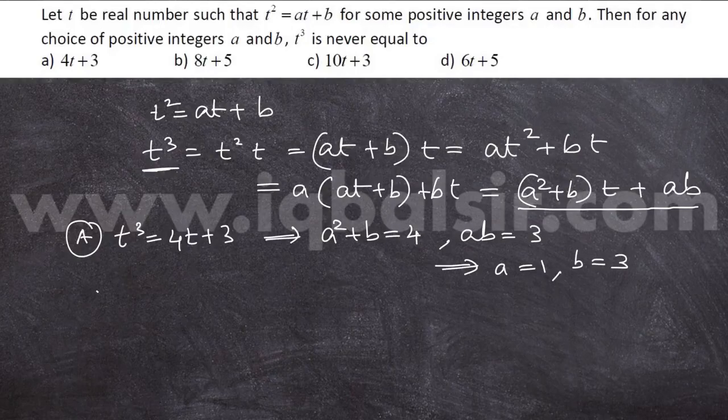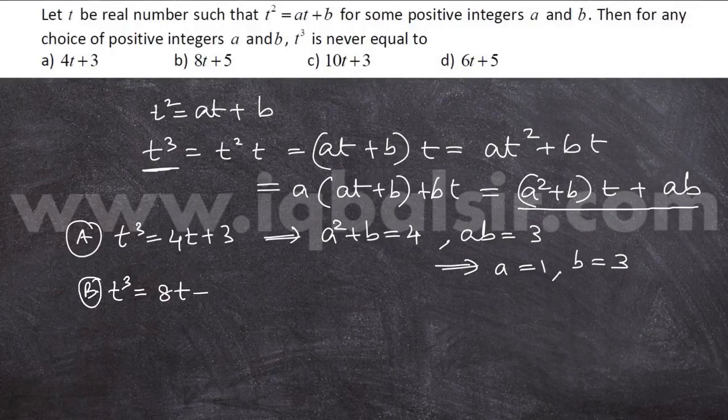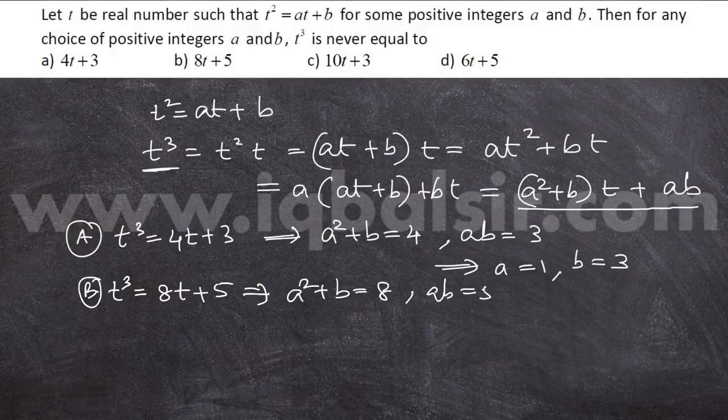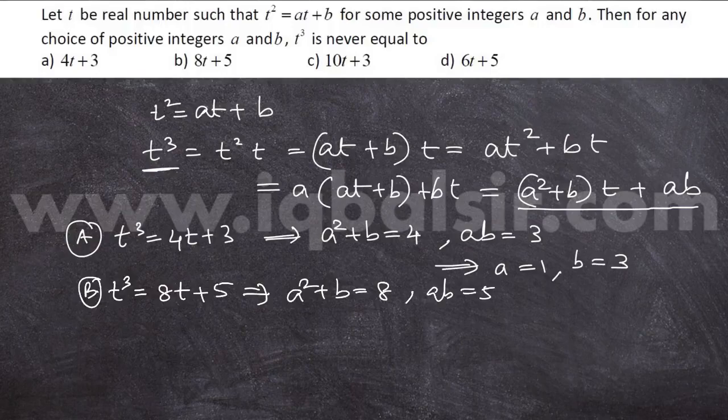For option B, t cubed is equal to 8t plus 5. That means a squared plus b is equal to 8 and ab is equal to 5. Whenever ab is 5 and a and b are positive integers, we should have a equal to 5 and b equal to 1, or a equal to 1 and b equal to 5.